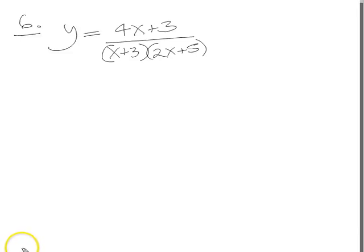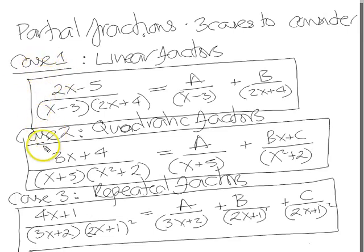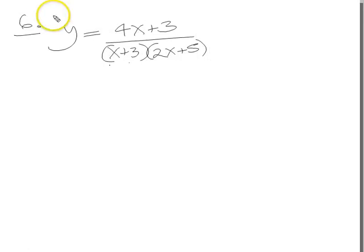Okay guys, let's have a look at number 6. We've got y equals 4x plus 3 over the linear factors x plus 3 times 2x plus 5. We've already given the game away because we've got 3 possibilities to choose from, and it's clear that it's linear factors, this case here. So in formal structure it's A over the first linear factor plus B over the second. That'll be case 1, so let's just jot that down.